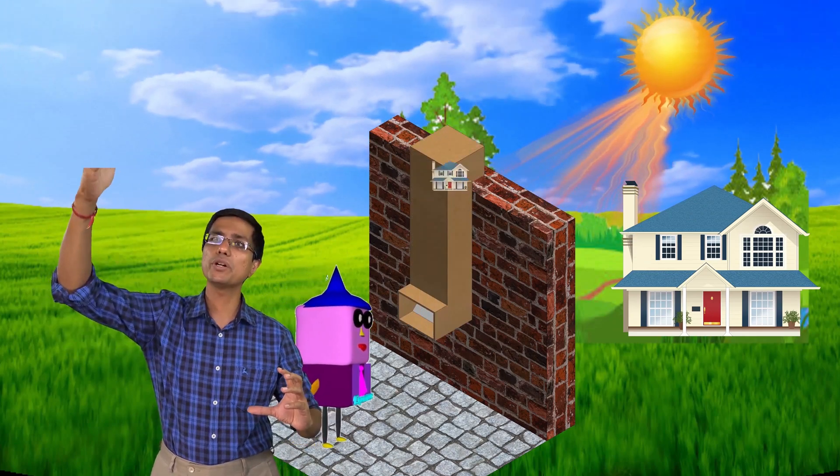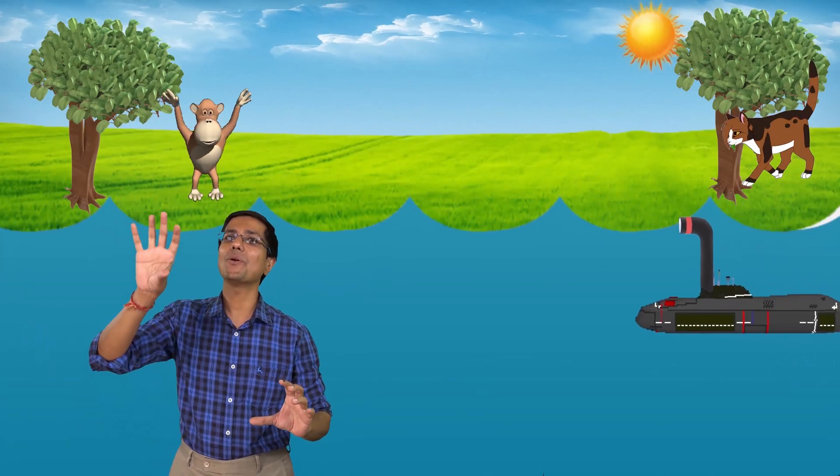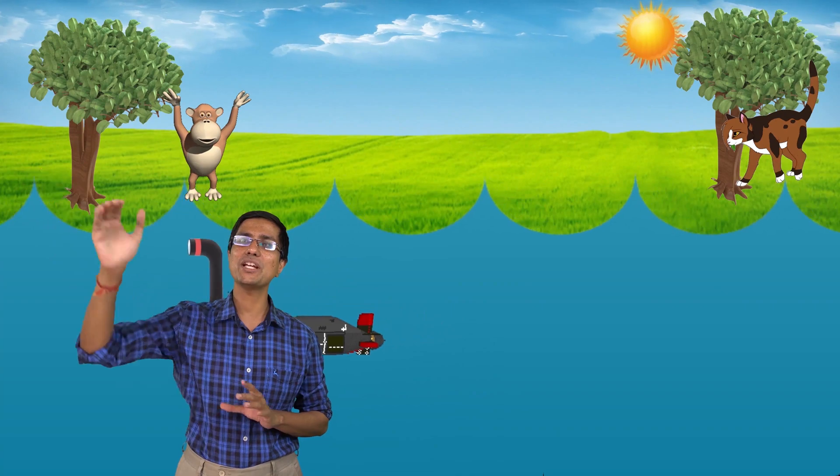This periscope actually helps us to see objects which are obstructed by direct vision. If an object I'm not able to see, maybe it's over a wall or inside a window, I can use a periscope to sort of peek inside. I get a view which I would normally not get by using my naked eyes.